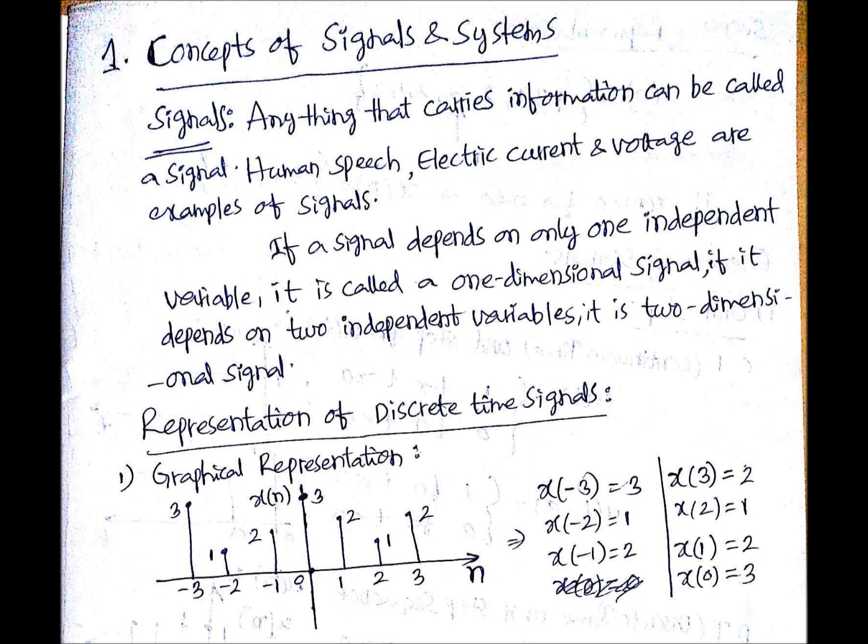Similarly, you can proceed for all those values. If you have not given anything, those values will be 0. You should be in a position to get either of this - if you have given these values, you should be able to represent like this waveform, and if you have given this kind of figure, you should be able to get all these values.